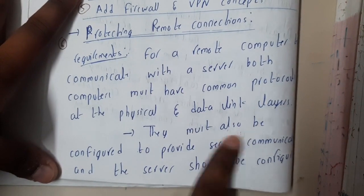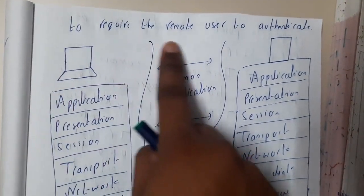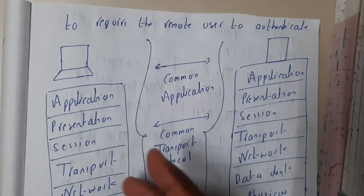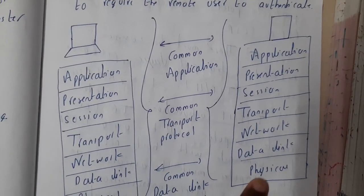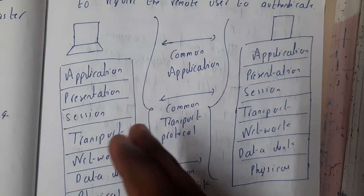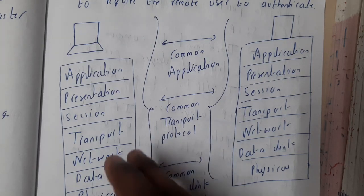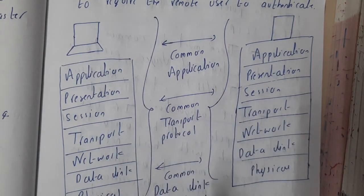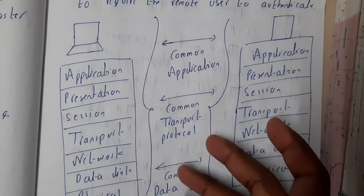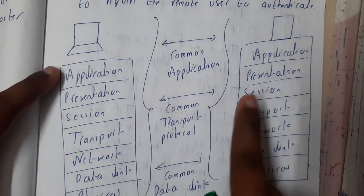The server must always be configured to provide secure communication, and the server should be configured to require the remote user to authenticate. On the client side there should be security, and on the server side, whenever a user logs in, they should be properly authenticated to verify whether they are a legitimate user or not.